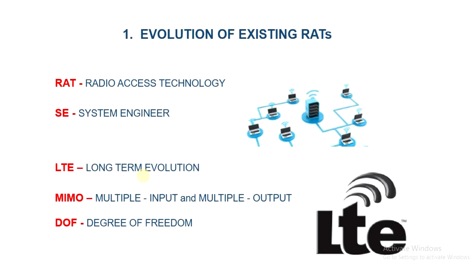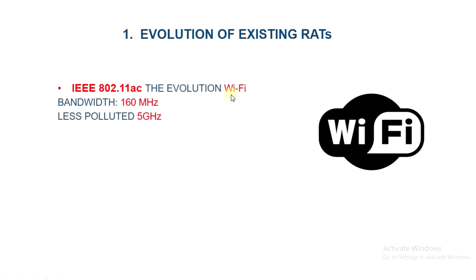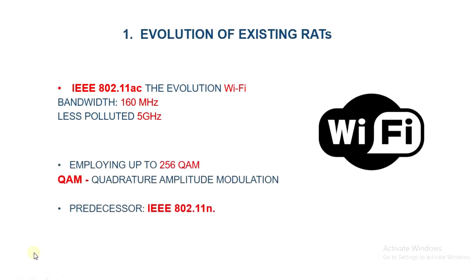Wi-Fi also needs to evolve to better exploit the available spectrum. The IEEE 802.11ac, the latest evolution of Wi-Fi technology, can provide broadband wireless pipes with multiple gigabits per second data rates. It uses a wider bandwidth — up to 160 MHz — at the less polluted 5 GHz ISM band, employing up to 256 QAM (Quadrature Amplitude Modulation). It can also support simultaneous transmissions of up to four streams using Multi-User MIMO. The incorporated beamforming technique has boosted coverage by several orders of magnitude compared to its predecessor, IEEE 802.11n.